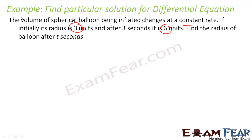Please pay attention — it is a technical question. The volume of a spherical balloon is changing at a constant rate, so the first thing we get is dV/dt equals some constant k.